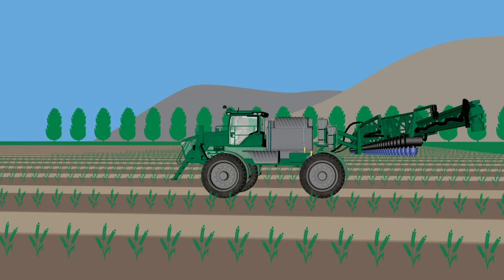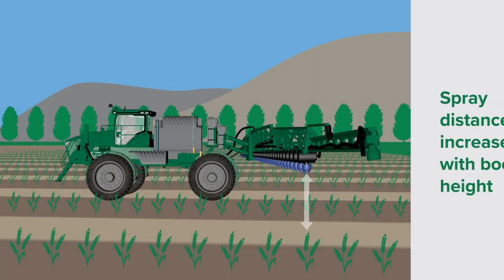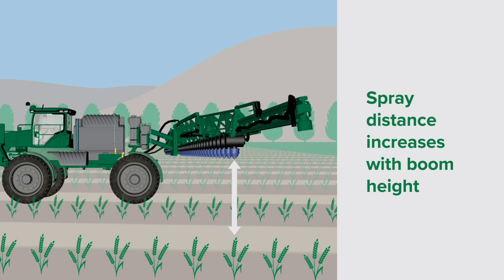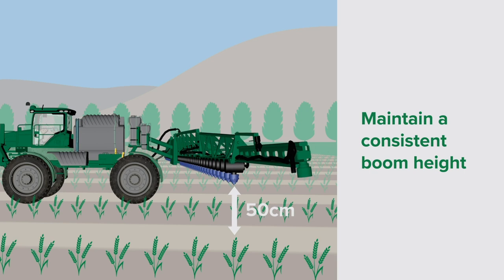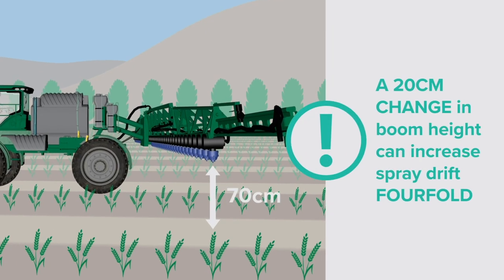When first entering a paddock, be sure to set your boom height as this can have a significant impact on spray drift. The higher the spray release height above the target, the greater the distance the spray drift will travel. Maintaining a consistent boom height of 50 cm or lower above the spray target is important to ensure evenness of spray coverage across the target. An increase in boom height from 50 to 70 cm above the target can increase drift fourfold.